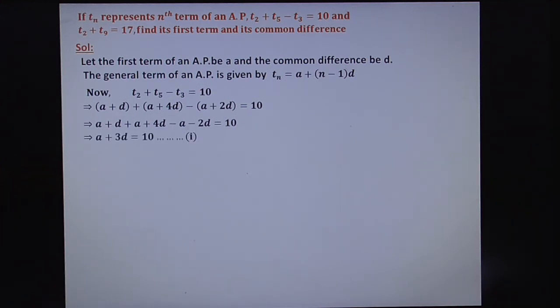Now, what is your next step? Use the second equation. That is T2 plus T9 equals 17. Again, take this equation using the general formula or nth term of AP series. Substitute N equals 2 and substitute N equals 9.